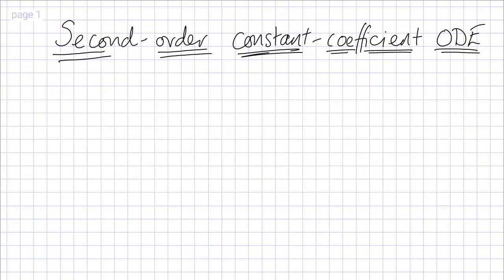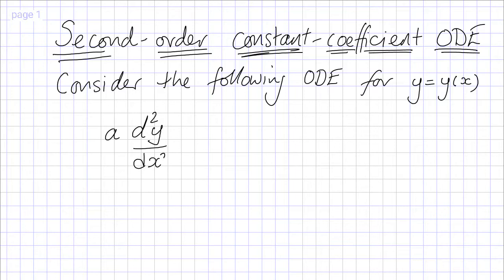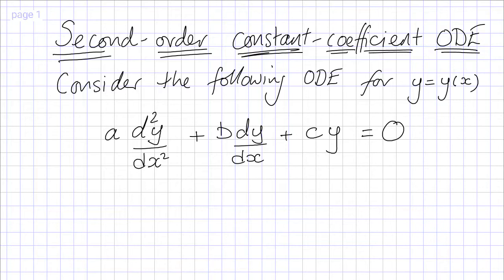In this video we're going to learn how to solve a second order constant coefficient ordinary differential equation. We're going to consider the following ODE for y, which is a function of x. We've got a times the second derivative of y with respect to x, plus b times the first derivative of y with respect to x, plus c times the function itself, all equals 0, where a, b, and c are constants. This is the equation we want to solve.